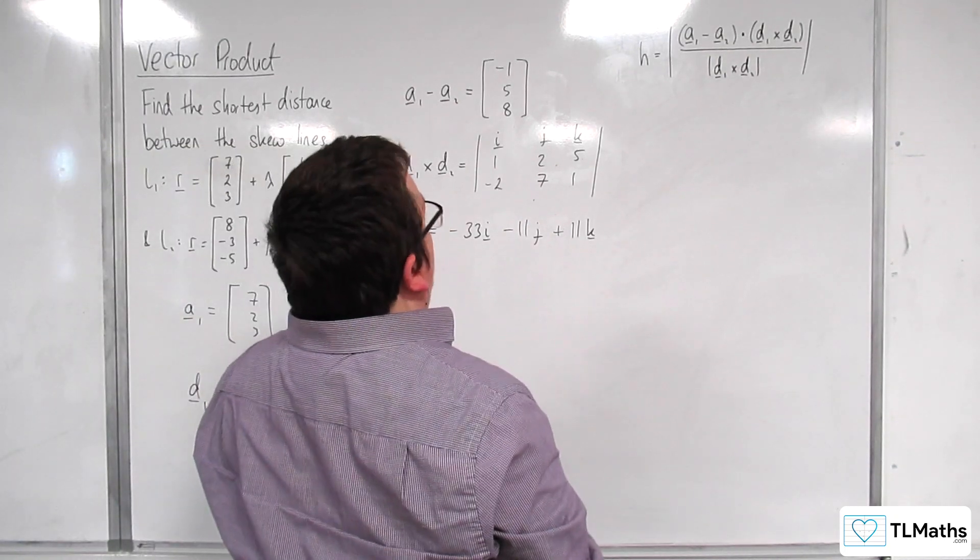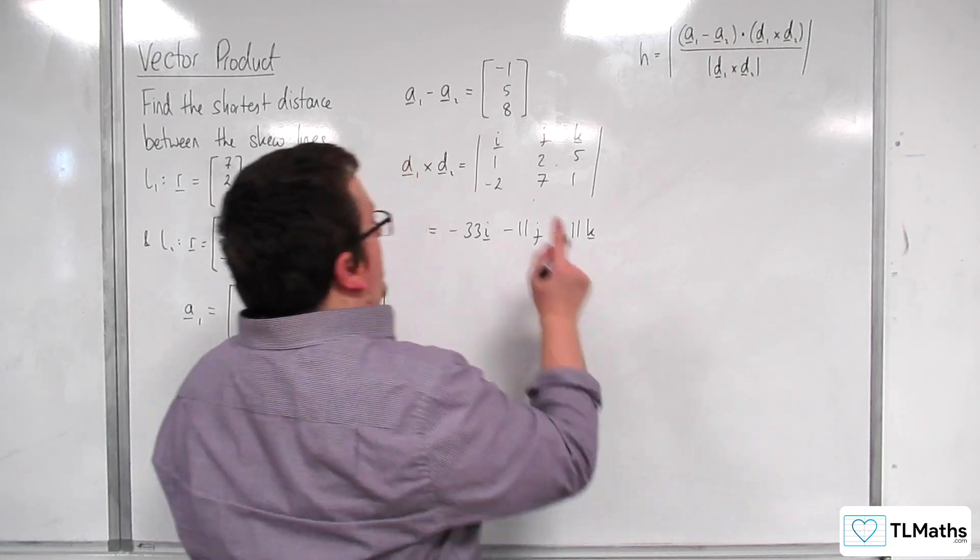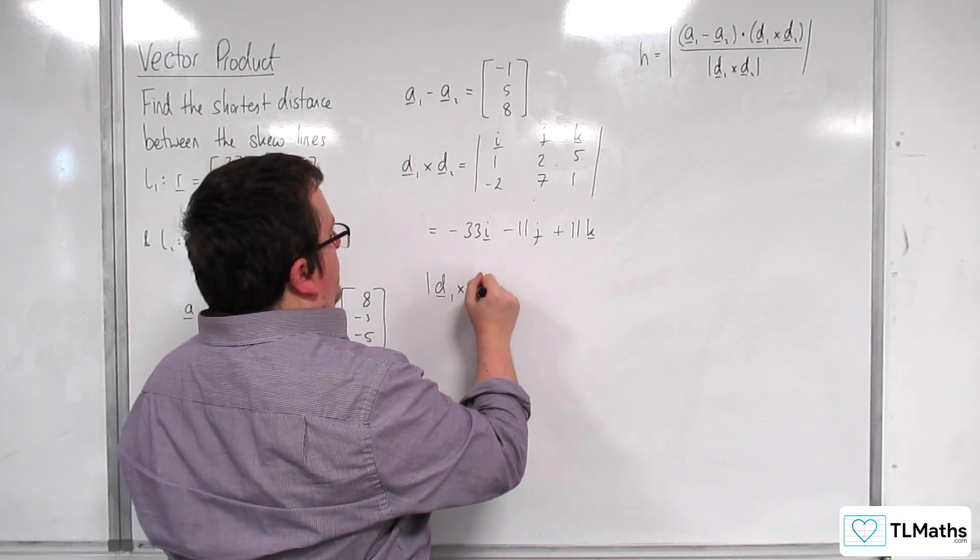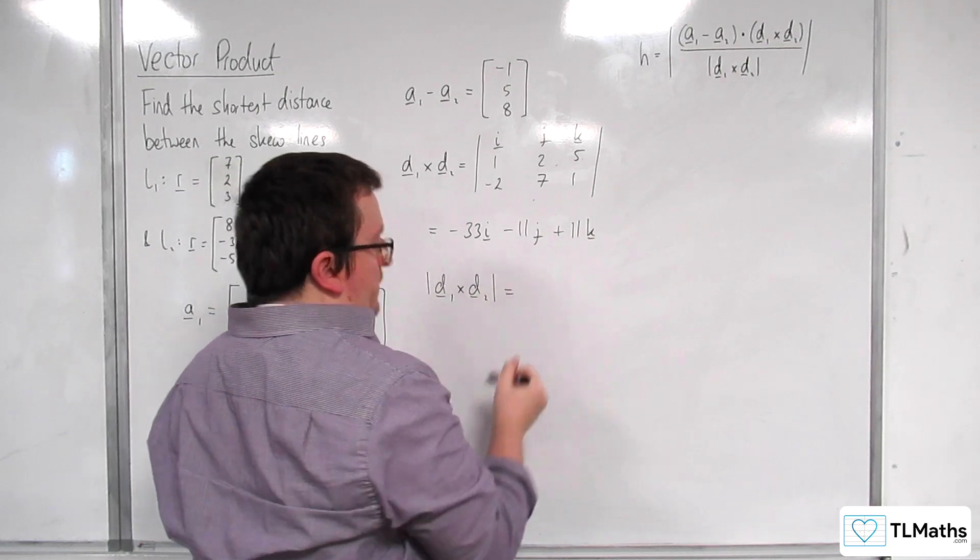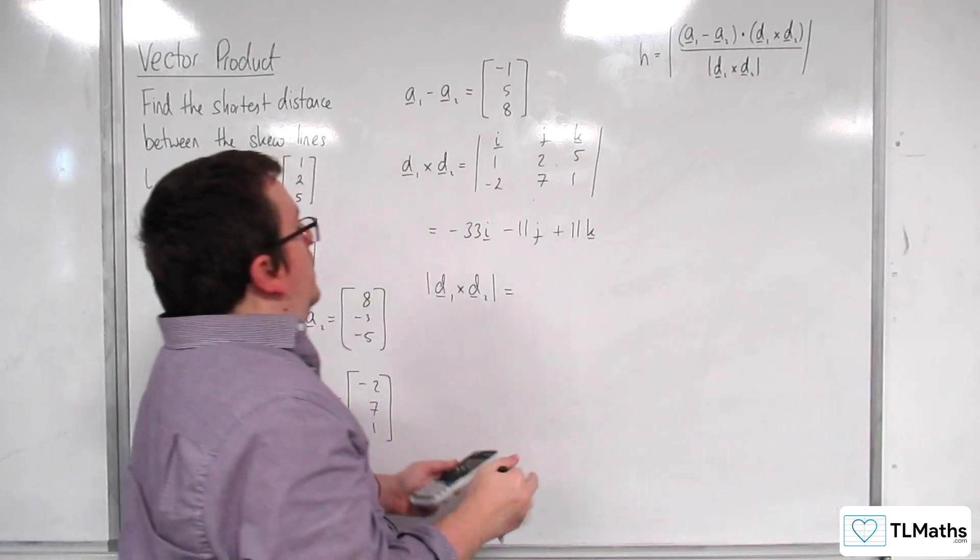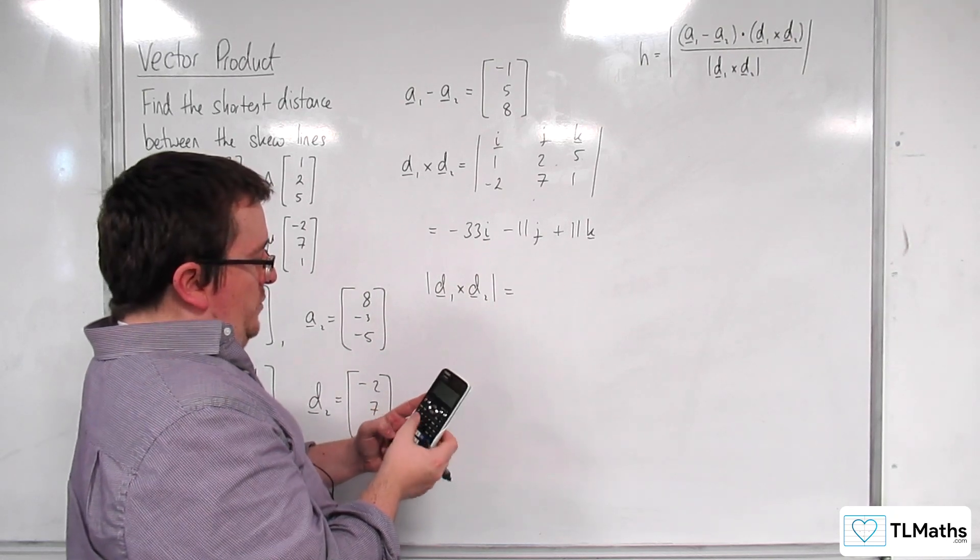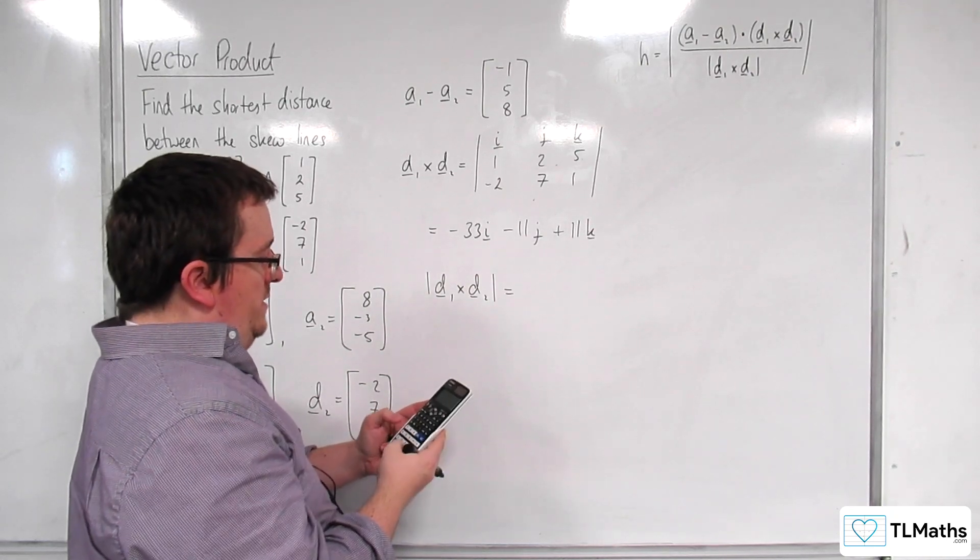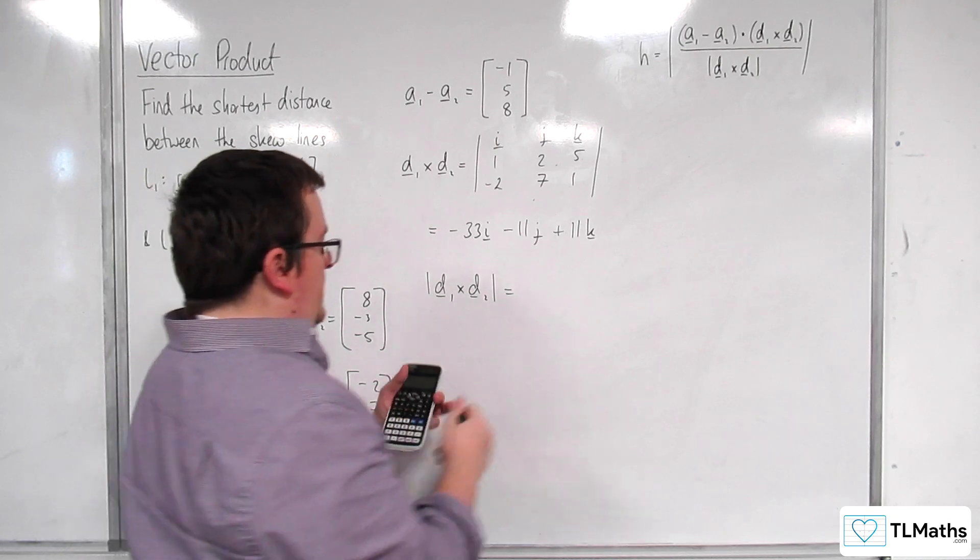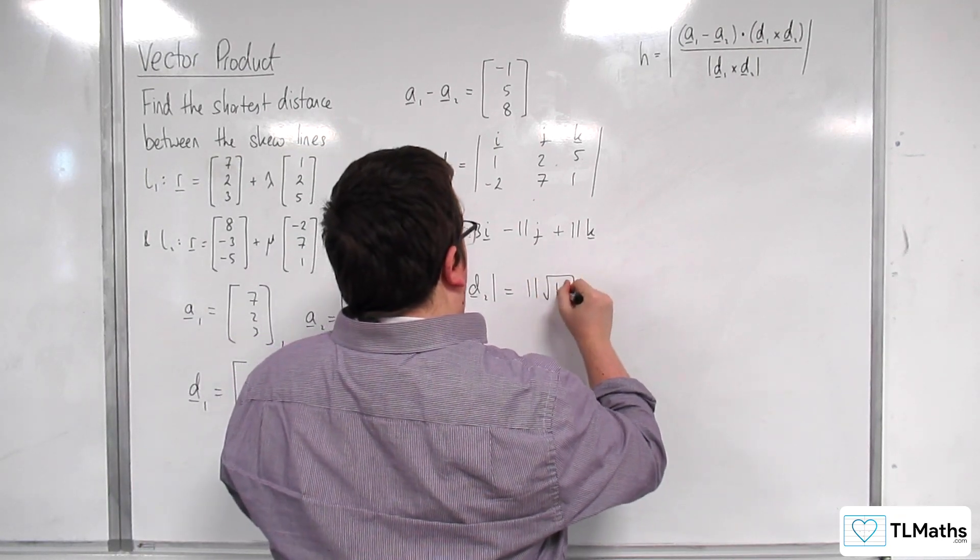So, I'm going to need to work out the length of this vector. So, D1 crossed with D2 length. So, we've got 33 squared plus 11 squared plus 11 squared square rooted is 11 root 11.